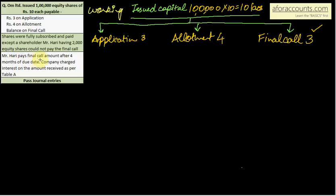Mr. Hari pays final call amount after 4 months of due date. Company charges interest on the amount received as per table A. So table A mein kya likha hota hai? Interest on amount of late payment. Company will charge interest at the rate 5% per annum and further respective months calculate karna padega. So let's start.